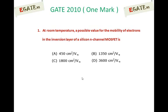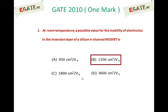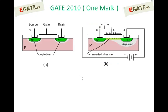The correct answer for this one is 1350 cm² per Vs. That is B answer. We know the diagram for the n-channel construction of n-channel MOSFET.